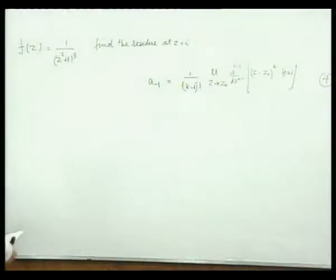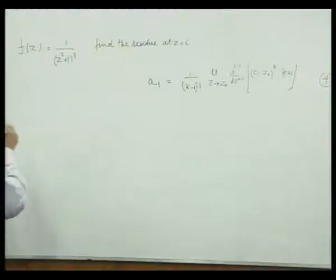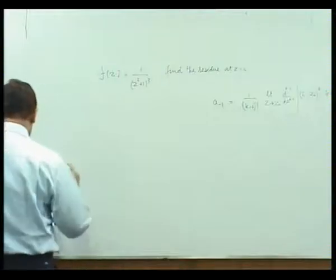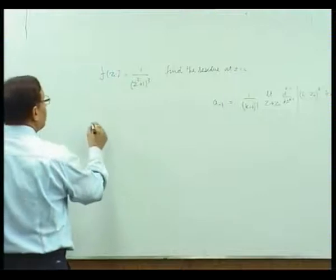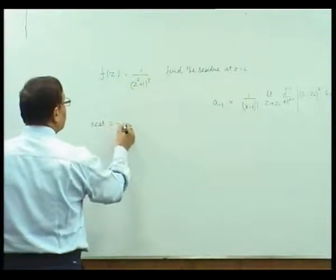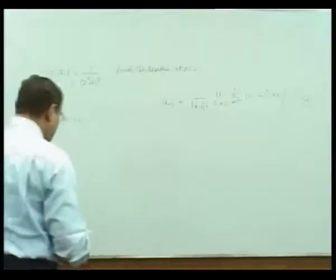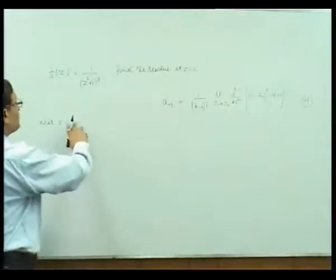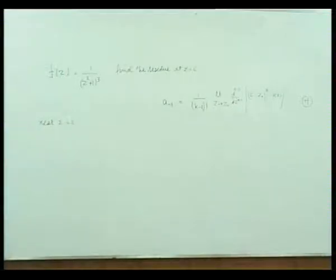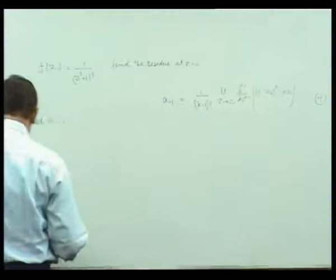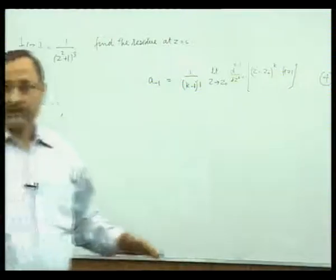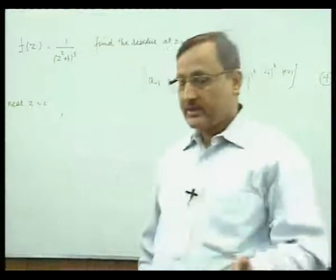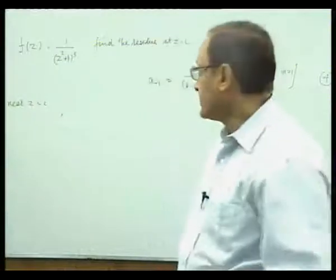Then we always try to expand by the Laurent series. The alternative method to solve this question: f(z) = 1/(z²+1)³ and we have to expand it near z = i. It is easier to manipulate power series in powers of z than those in powers of z - z₀.